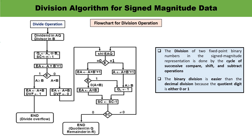Binary division is simpler than decimal division because the quotient digit may only be 1 or 0. The simple division process includes comparison, shifting, and subtraction operations. The detailed flowchart has been discussed previously, and it is also shown here because it will be helpful while solving the numerical.